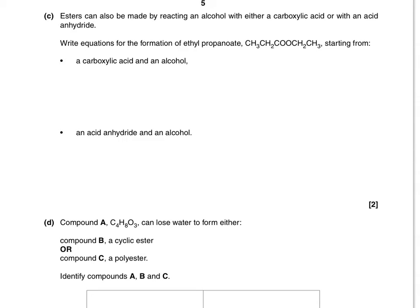Part C of the question is a traditional esters question, where we're asked to suggest the reactants that could be used to make ethyl propanoate. The way I'd tackle this is to remind yourself that the 'ethyl' part of the ester — the alkyl part — comes from the alcohol. So ethyl would come from ethanol.